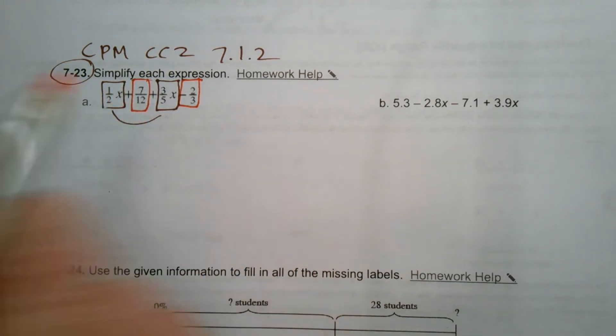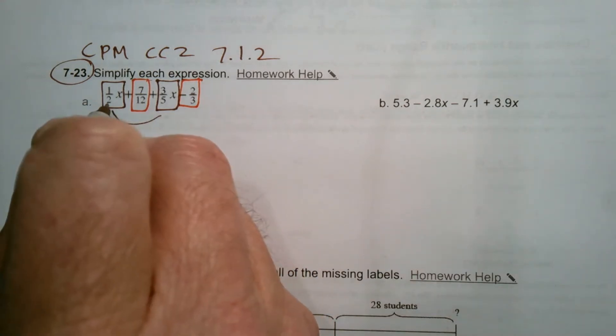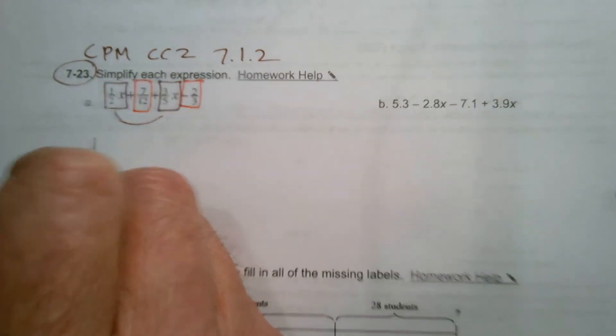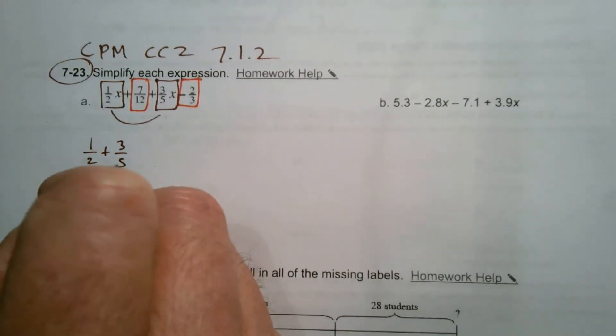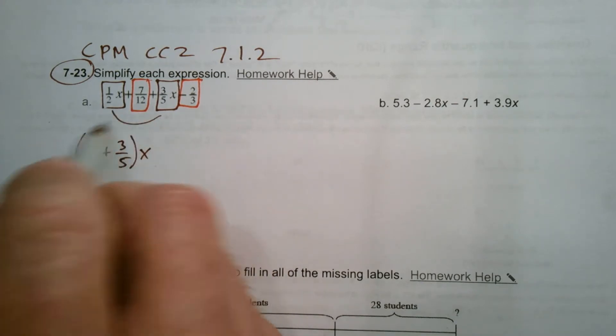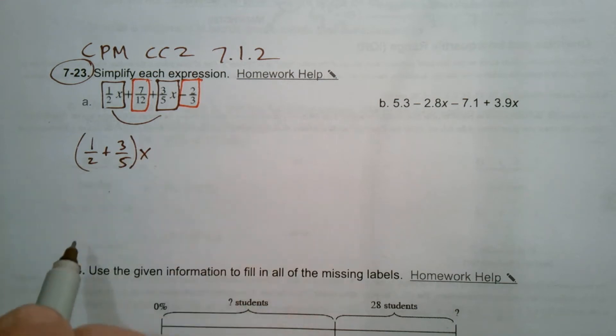So my operations for the variable terms are going to be taking and figuring out what 1.5 plus 3.5 is. So I'm going to take 1.5 plus 3.5, and that's going to be my x, whatever the coefficient in front of the x. So I've just got to add those up, and that'll be my coefficient of the x.